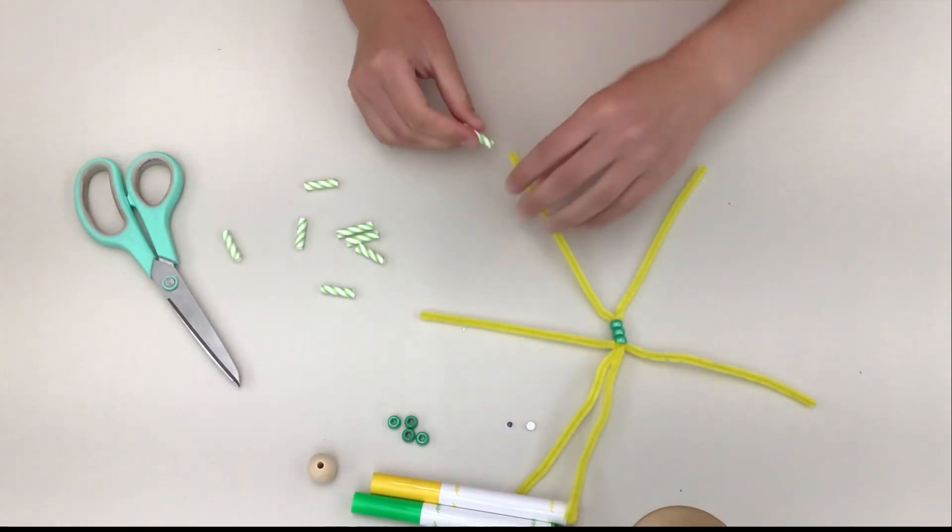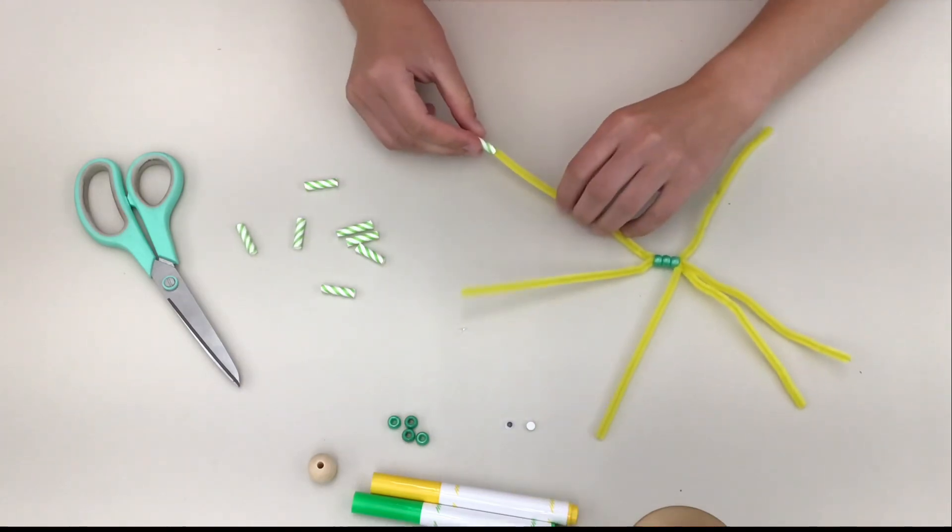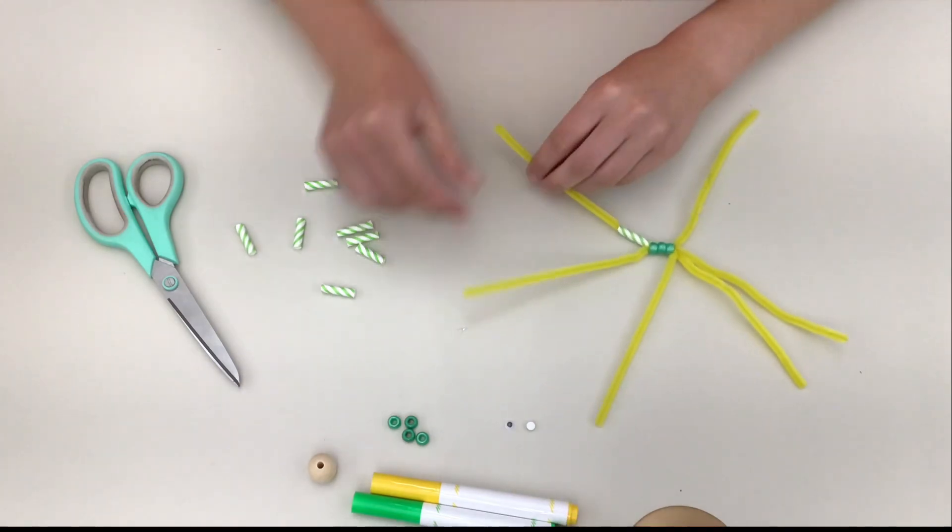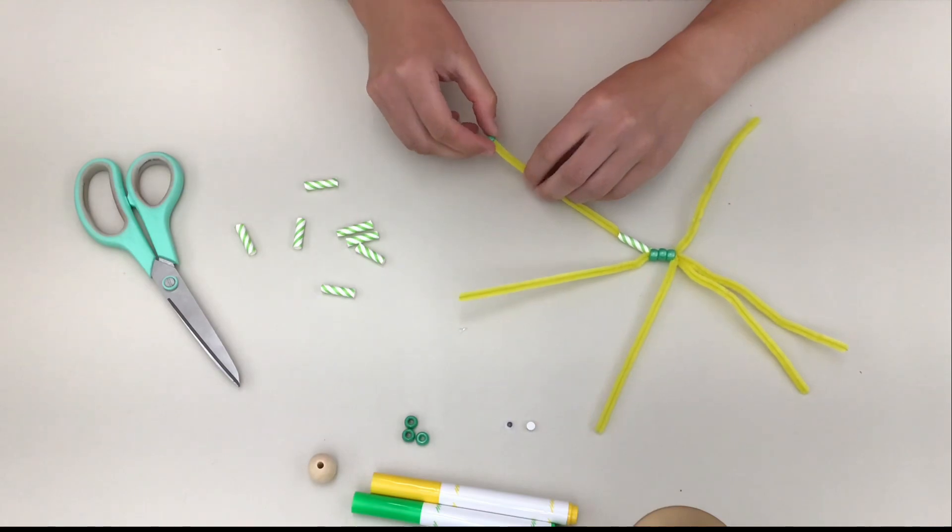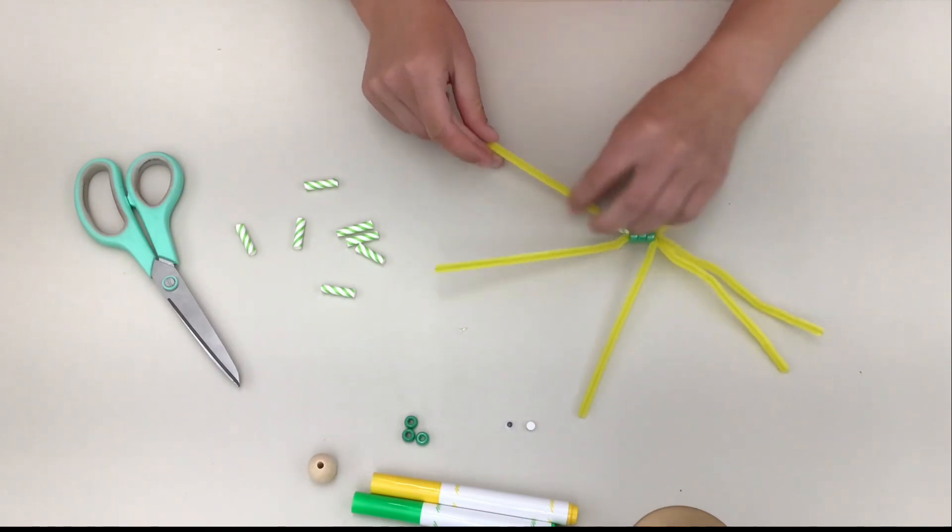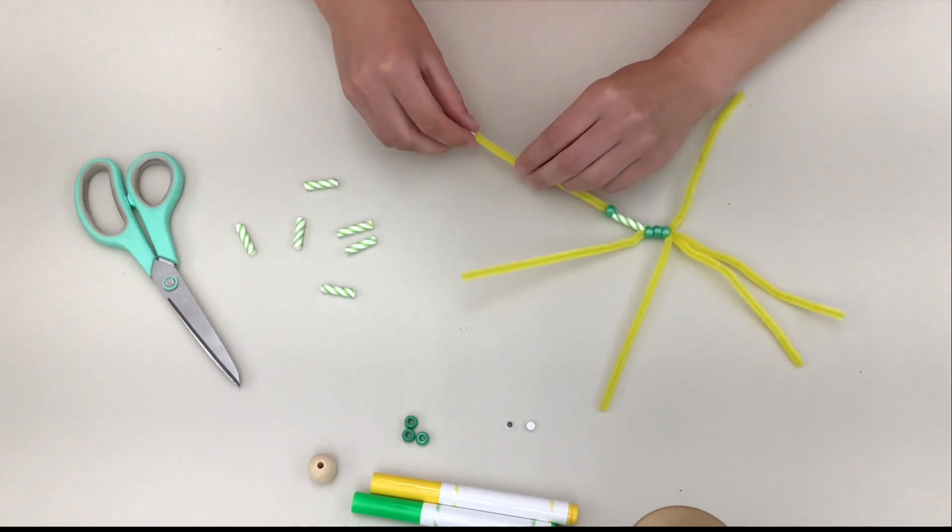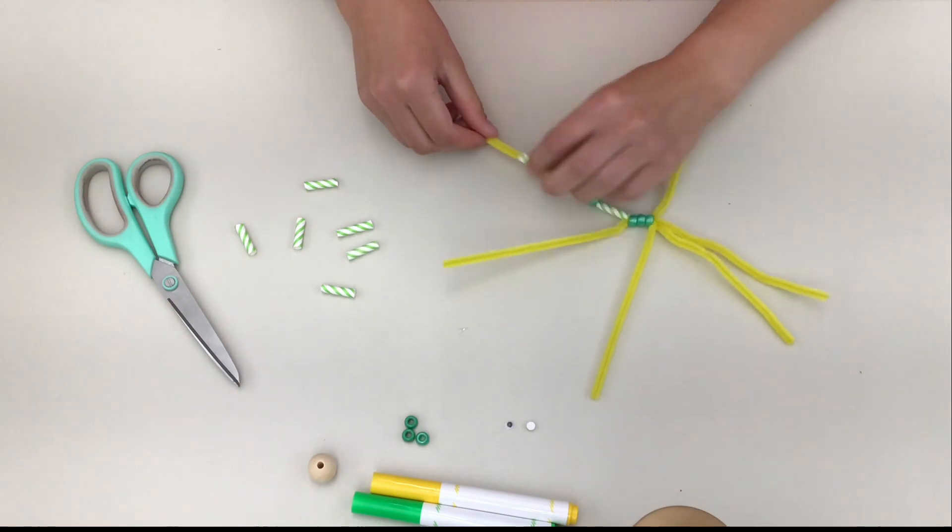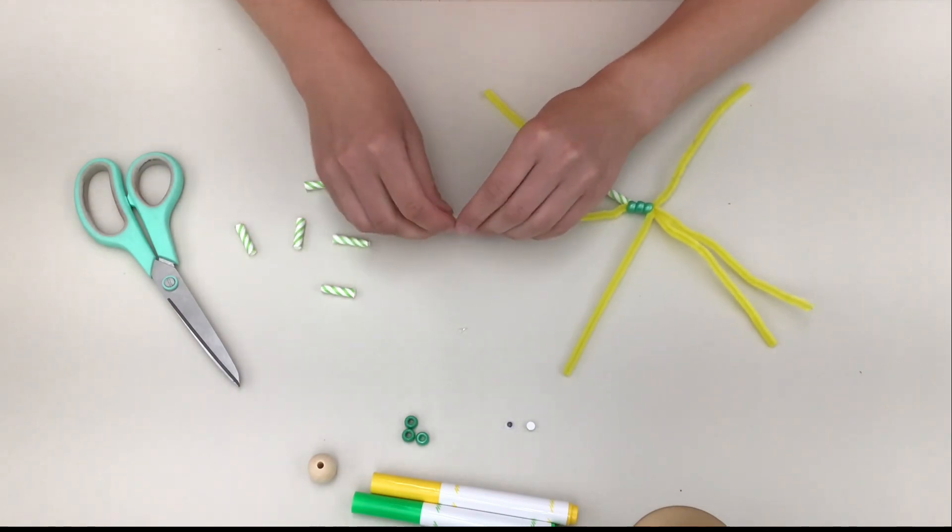Once you've got all the straw segments cut, you're going to use two segments and one pony bead to make each leg and arm. So slide a straw segment on, then slide a pony bead on to form the joint, and then slide another segment on. Do this for both legs and both arms.